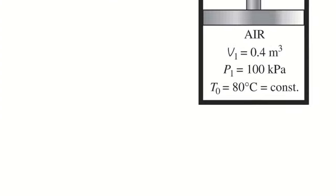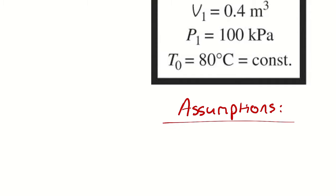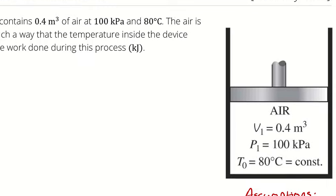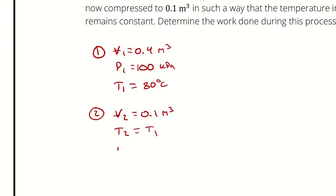Assumption: closed system, which you can write as assuming the mass is constant as well. In that case, M2 is equal to M1. We'll put an asterisk next to it to note that that's a result of our assumption.